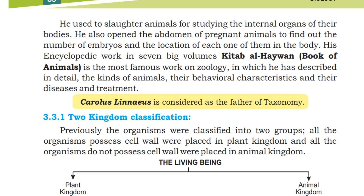His encyclopedic work in seven big volumes is the most famous work on zoology, in which he described in detail the kinds of animals, their behavioral characteristics, and their diseases and treatment.